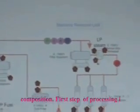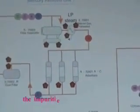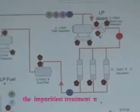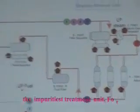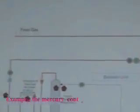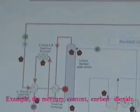The first step of processing is the impurities treatment unit, which removes, for example, mercury content, carbon dioxide, and moisture content.